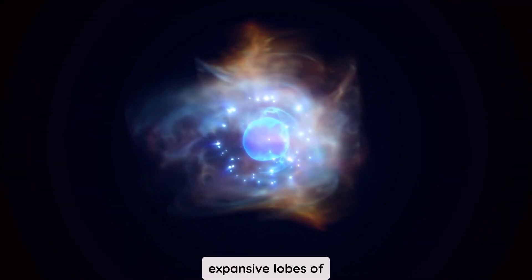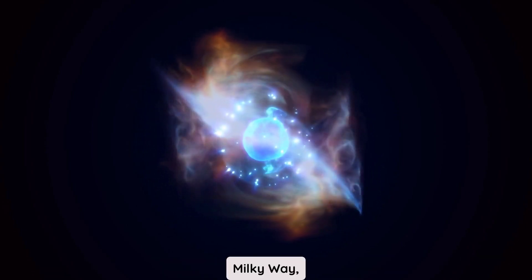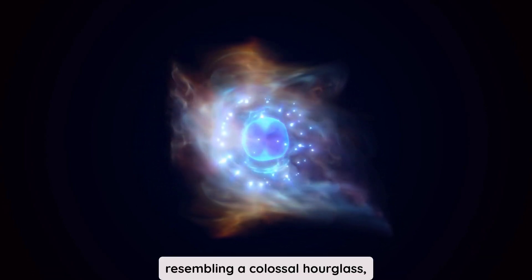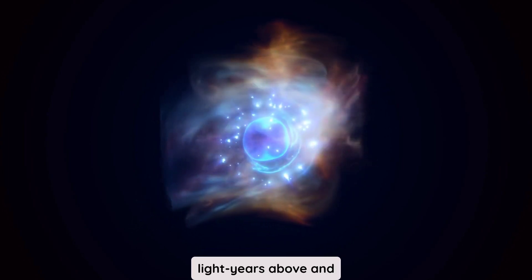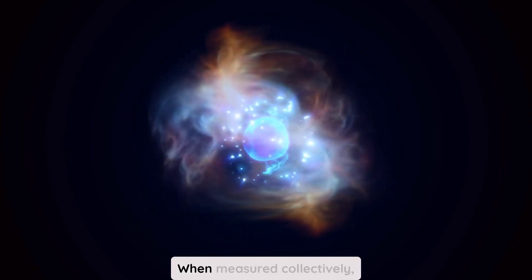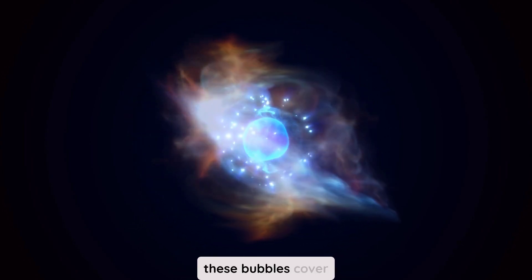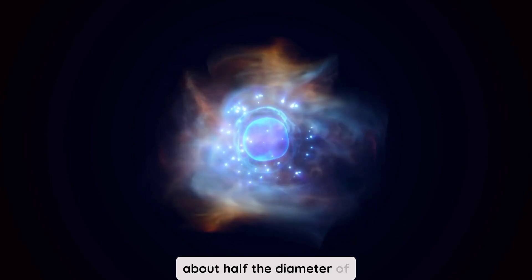These expansive lobes of energy envelop the center of the Milky Way, resembling a colossal hourglass, and extend approximately 25,000 light years above and below the central black hole. When measured collectively, these bubbles cover about half the diameter of the galaxy.